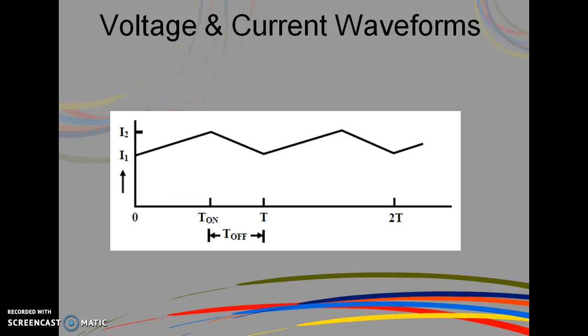The source current waveform is shown here. The current increases linearly from I1 to I2, the minimum value to the maximum value, during the time interval T on. Using the expression for di/dt, we get I2 minus I1 equals I max minus I minimum equals Vs divided by L times T on.